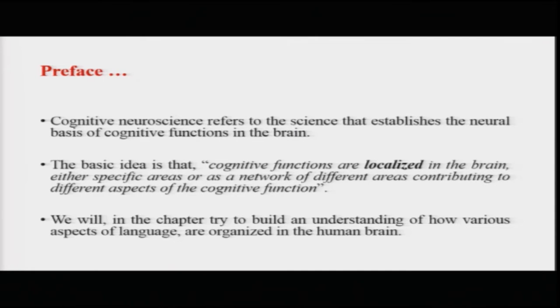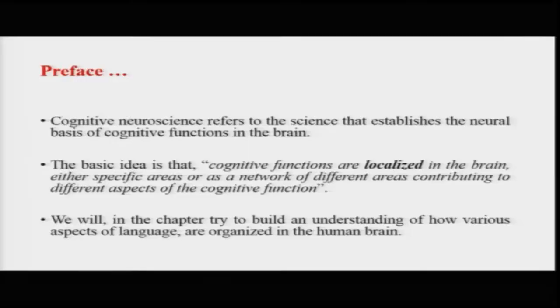Cognitive neuroscience refers broadly to the science that establishes the neural basis of cognitive functions. The idea is how each mental function is organized in the brain. Any mental function we talk about is either done in a localized fashion by specific areas of the brain, or in a distributed sense, accomplished by a network of areas in the brain.